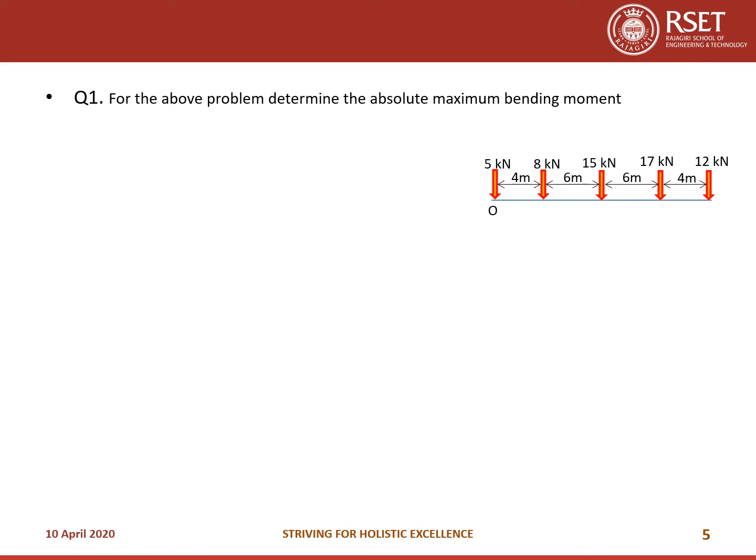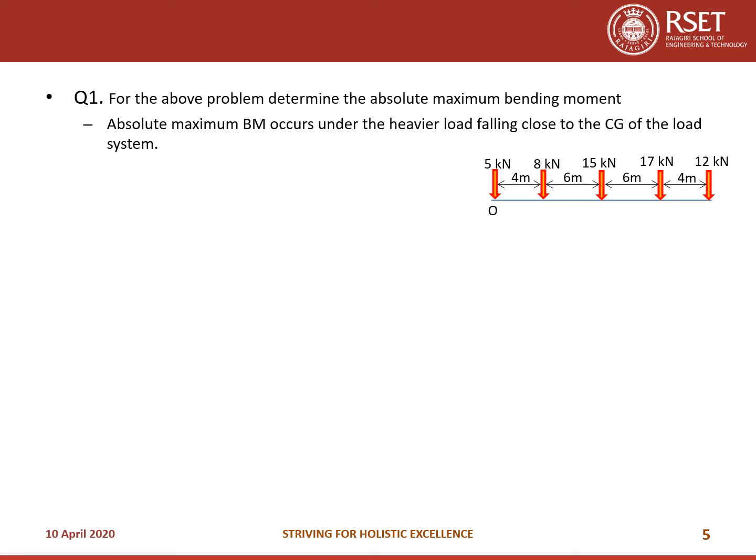For the same problem, determine the absolute maximum bending moment. The absolute maximum bending moment occurs under the heavier load falling close to the center of gravity of the load system. To locate the center of gravity, taking O as origin: (8×4 + 15×10 + 17×16 + 12×20) divided by (5 + 8 + 15 + 17 + 12) = 12.18 meters.